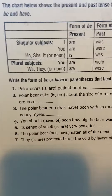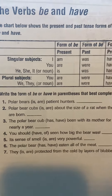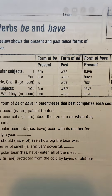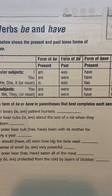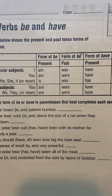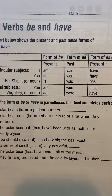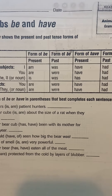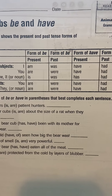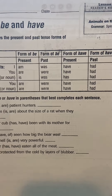Now if you have plural subjects like you, we, they — in present tense you would say you are, we/they are. In past tense you would say you were, we/they were. Present tense you would say you have or we/they have. And past tense you would say you had or we/they had.